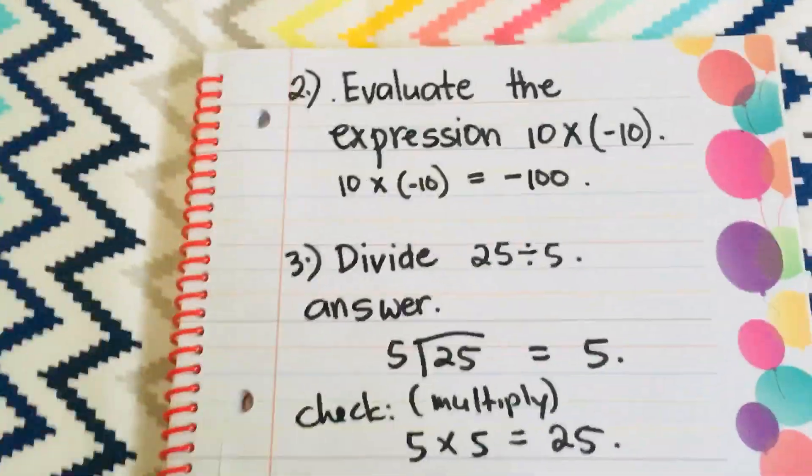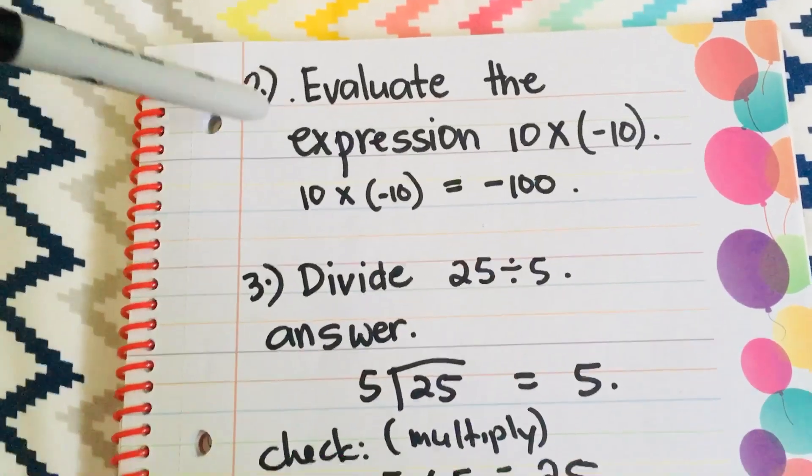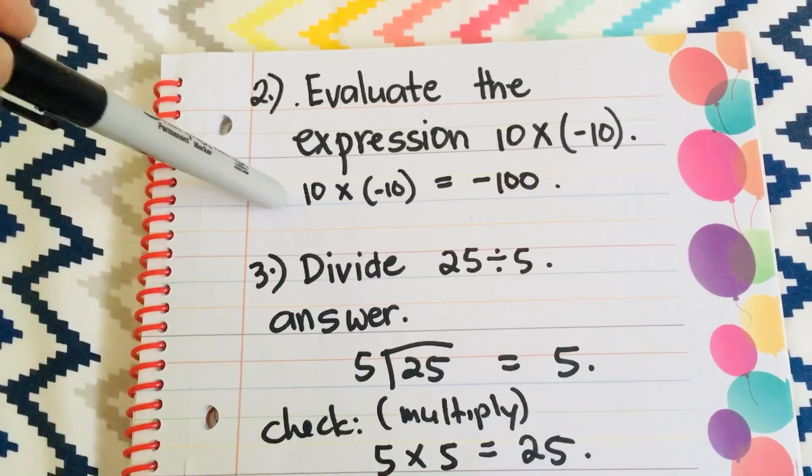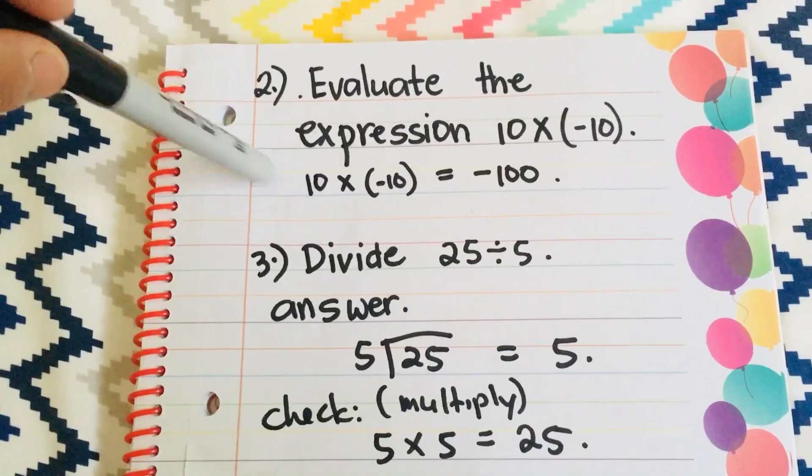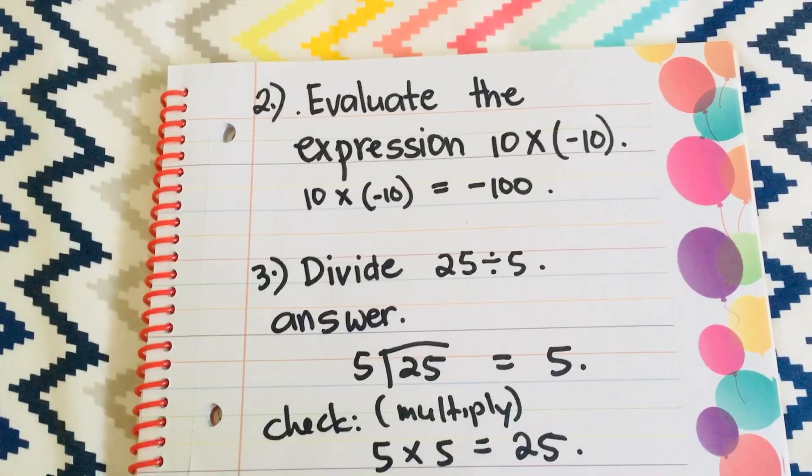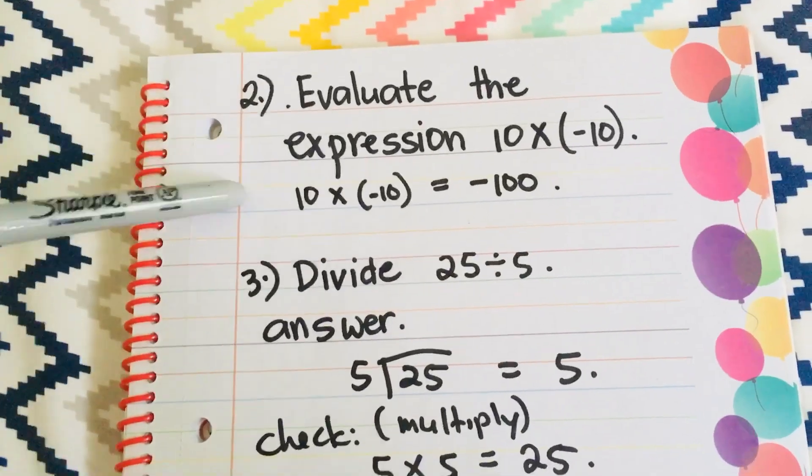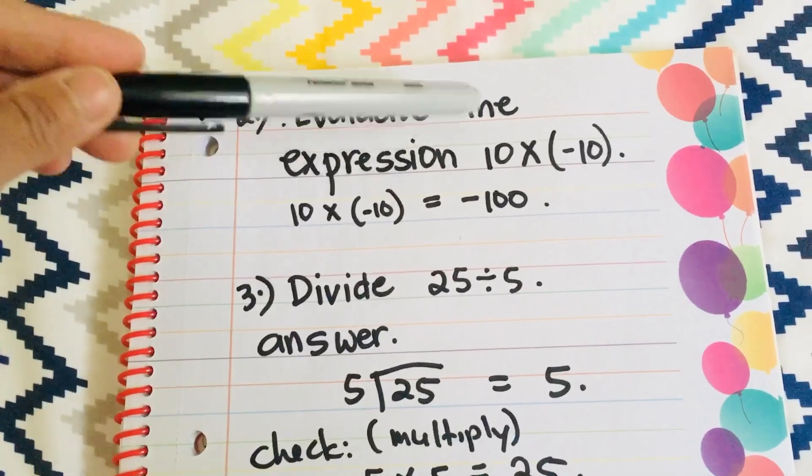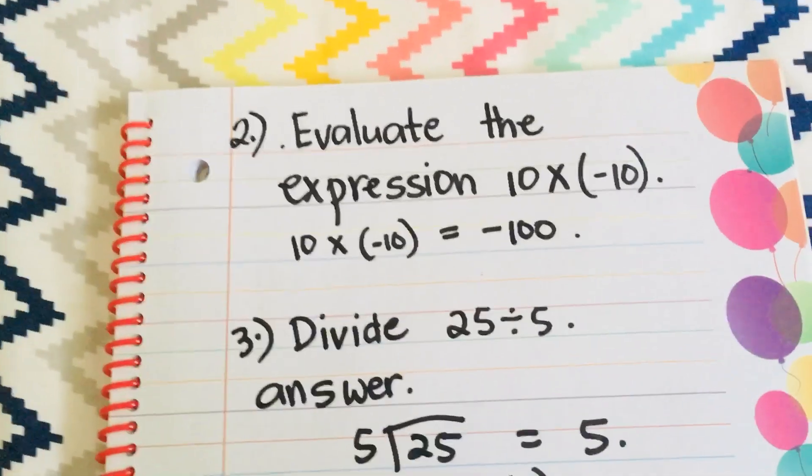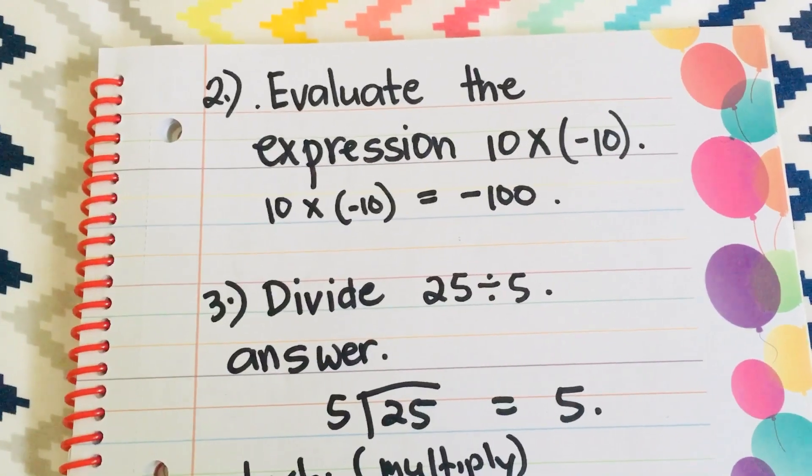Okay, number 2, evaluate the expression 10 times negative 10. So, when you multiply numbers with different signs, you have to copy the negative sign. So, 10 times negative 10 is negative 100, but if you multiply 10 times 10, which are both positive, the answer of course would be 100.